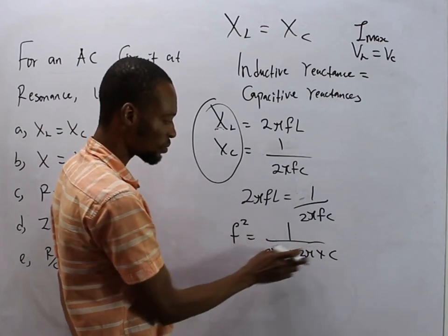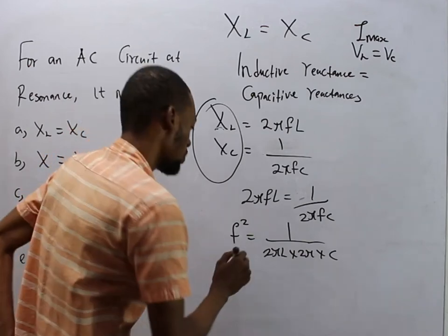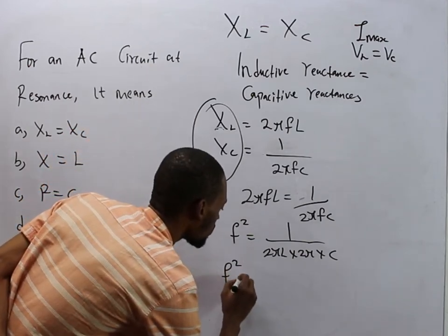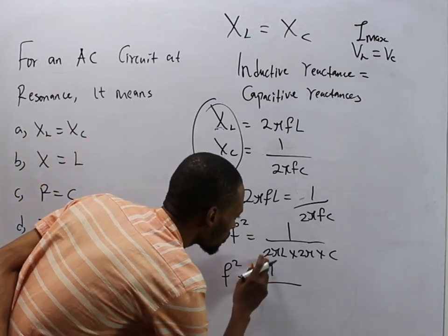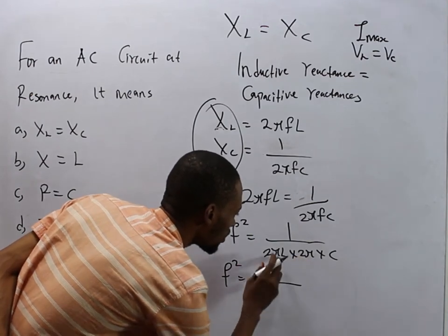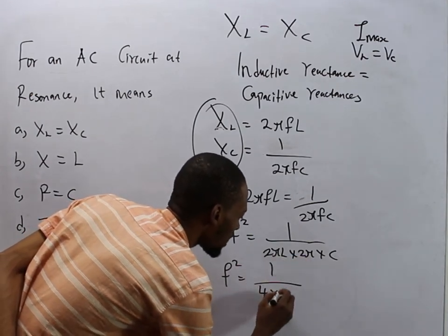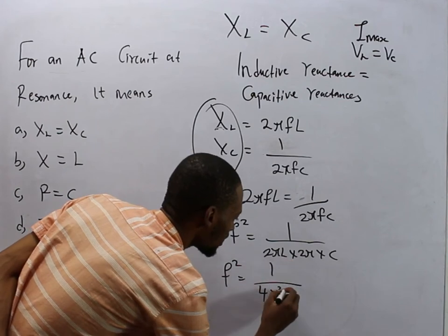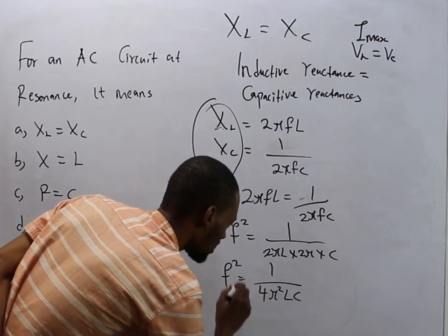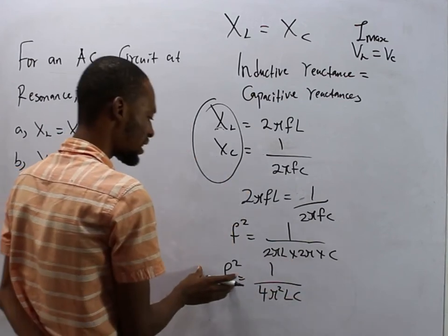So f squared equals 1 over 2 times 2 is 4, π times π is π squared, then LC. So now remember to get only f, we look for the square root of both sides.